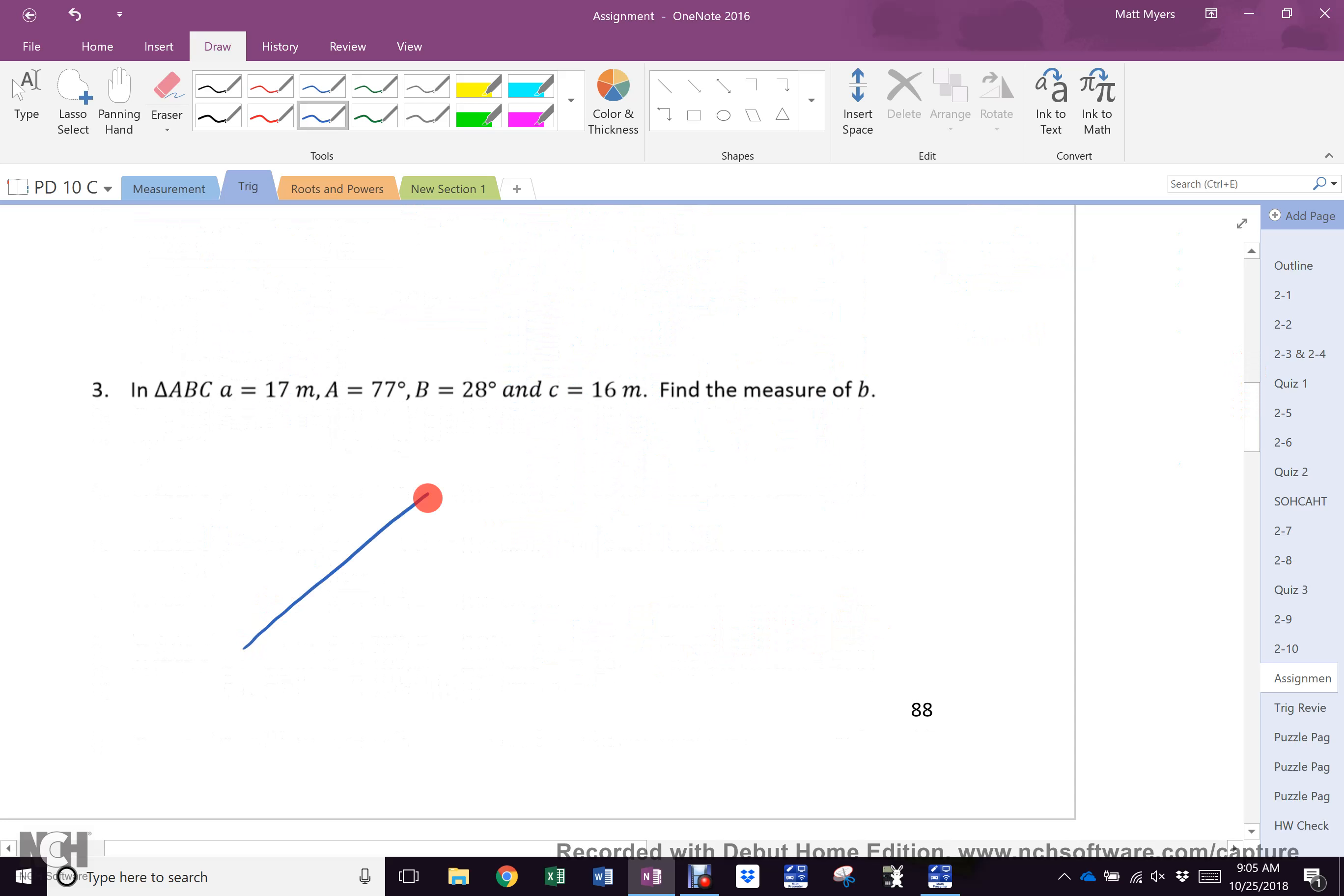In triangle ABC, A is 77. The way I've drawn it, this is the biggest triangle angle, so I'm going to make that C, which makes this 16, which makes this 28. I want this side, little b. Again, I have a pair because I know that this is 180 minus 77 minus 28. This is 75 degrees.